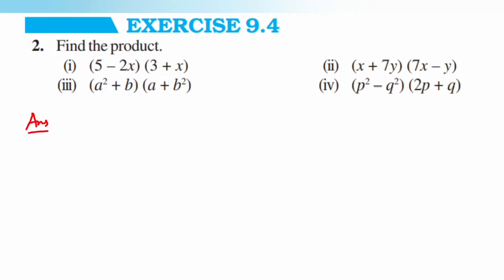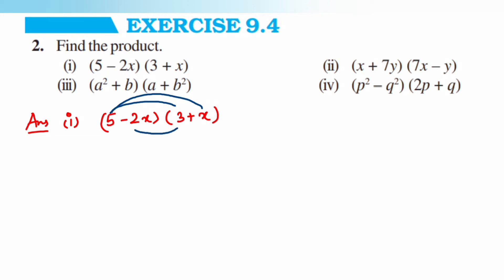The first question is (5 minus 2x) multiplied by (3 plus x). Whenever you're multiplying a binomial by a binomial, multiply each term of the first binomial by the second binomial. That means multiply 5 with 3, multiply 5 with x, then multiply minus 2x with 3, and multiply minus 2x with x.